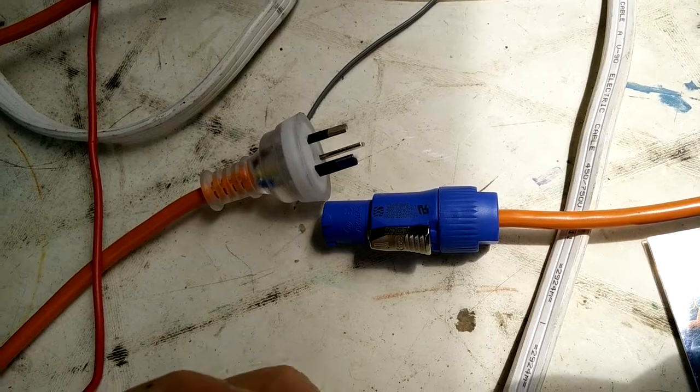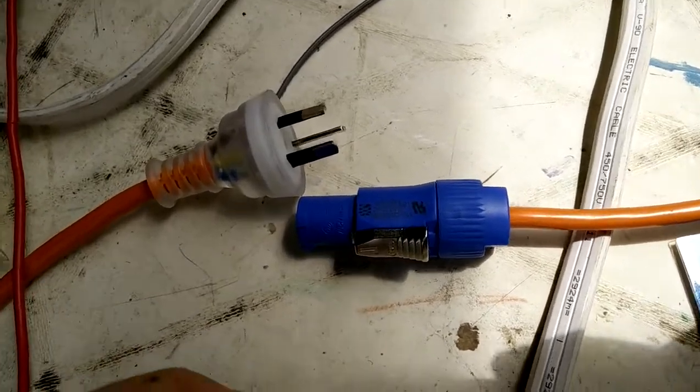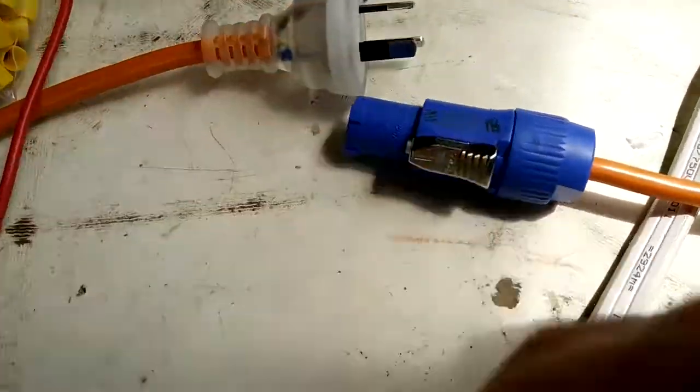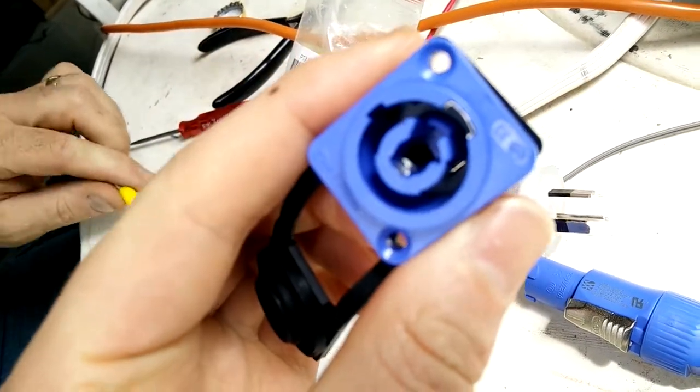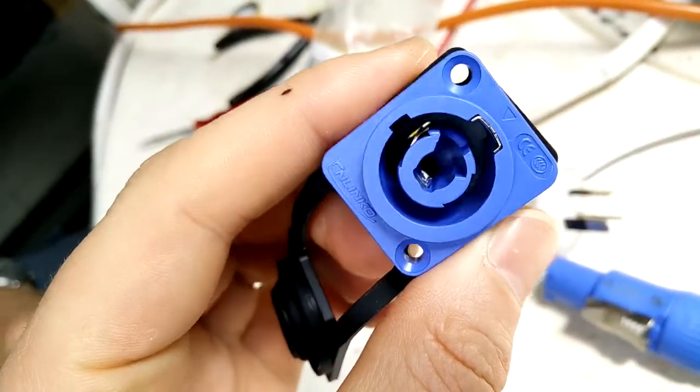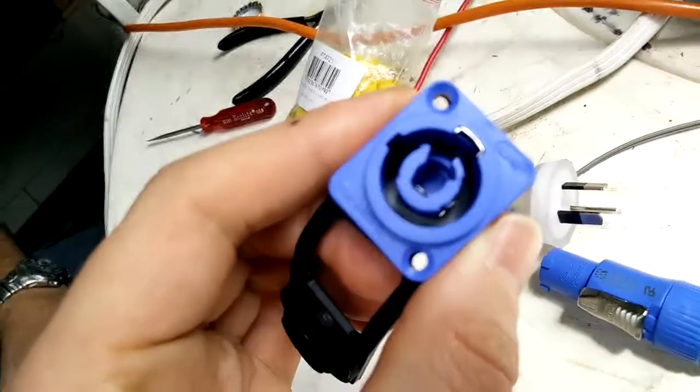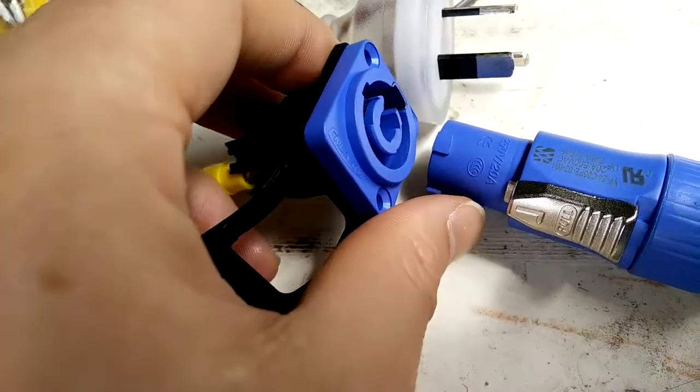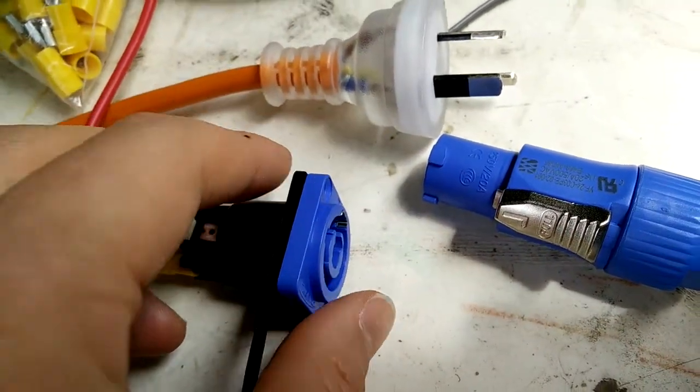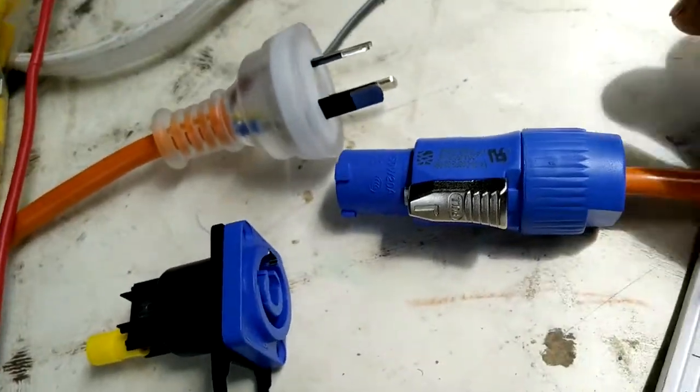These are a PowerCon style connector. They are, of course, completely IP65 rated. It's difficult to see, but on the very inside, right in the back there, there is actually a silicon seal that basically makes it so that when the front of this and the back of the socket meet, they actually seal completely and nicely, perfectly. They're a fantastic quality connector.